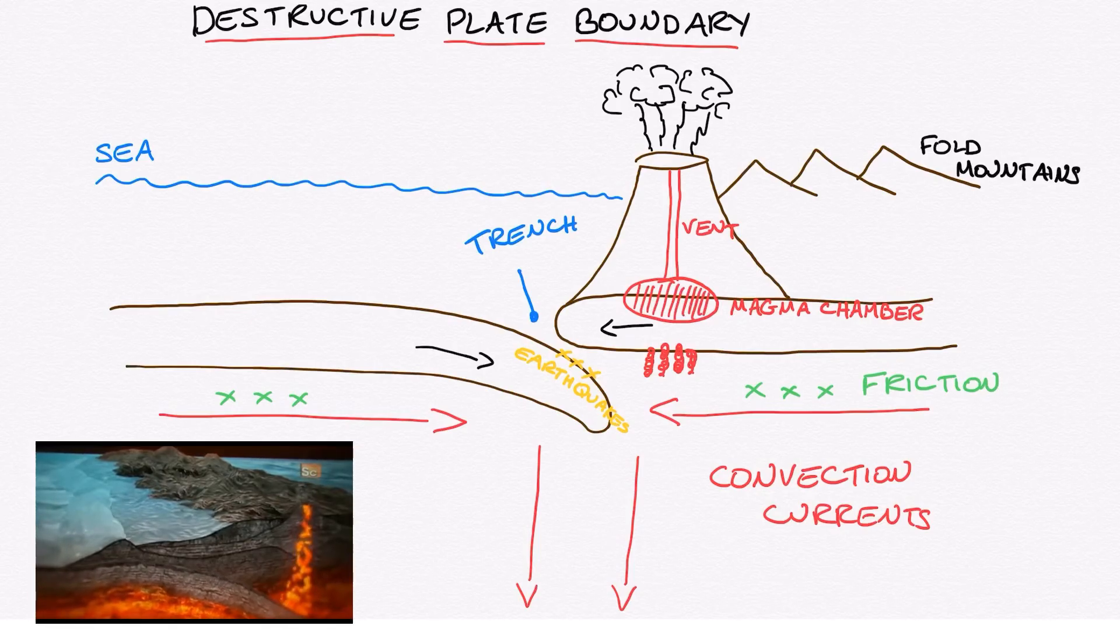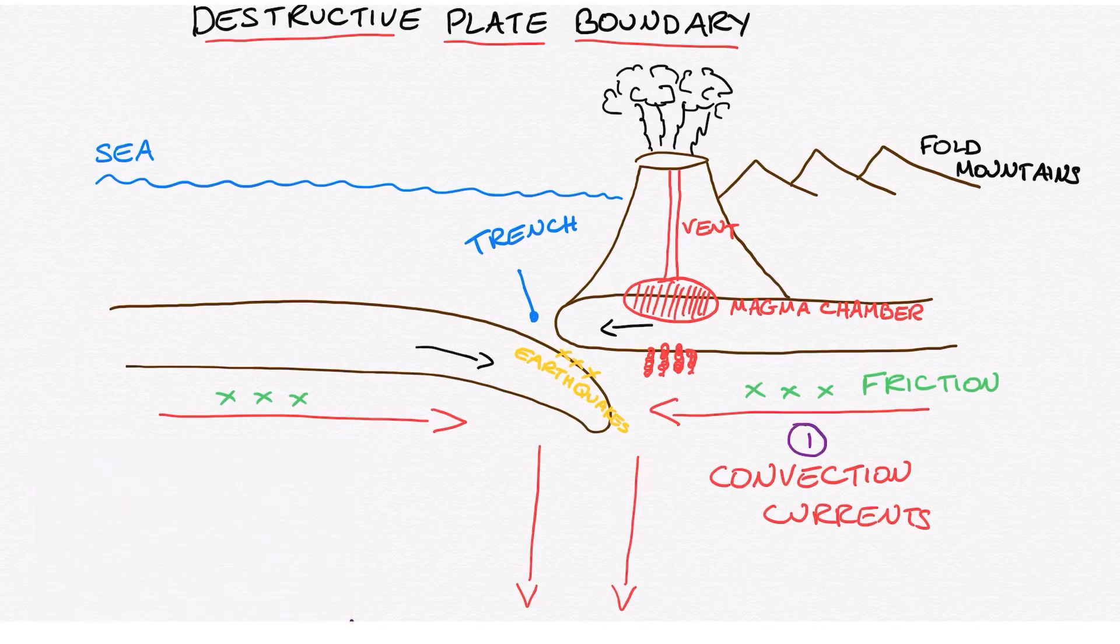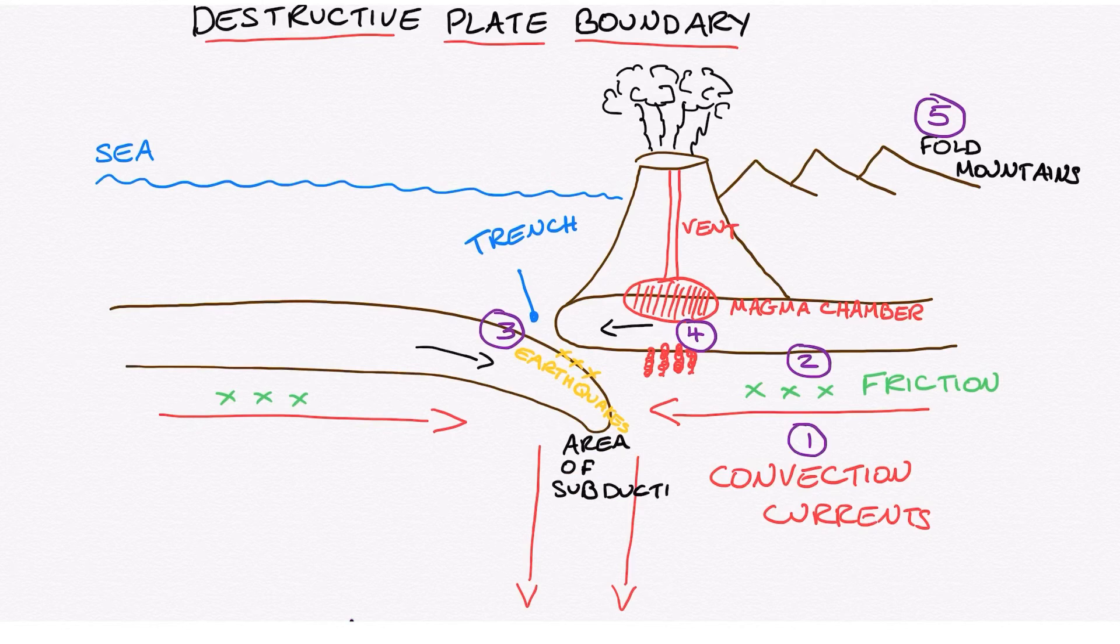So as you can see in this diagram, I've added five different numbers. These numbers indicate the order that you would explain the diagram. So to repeat again, number one, the convection currents move together. Number two, this causes friction to drag the plates in the same direction. Number three, the oceanic plate is subducted underneath the continental plate. Number four, the oceanic plate melts and that magma rises underneath the continental plate into the magma chamber. And number five, the movement of these plates causes folding and generates fold mountains along the continental plate boundary.